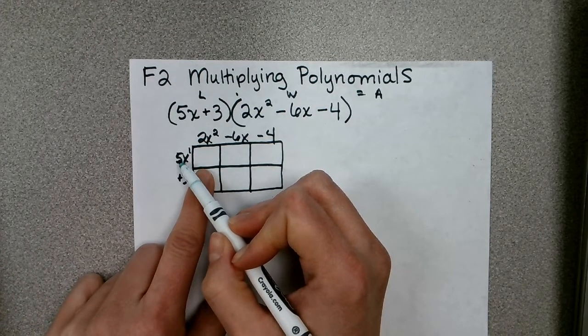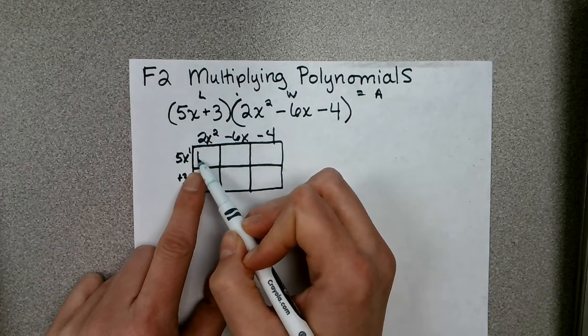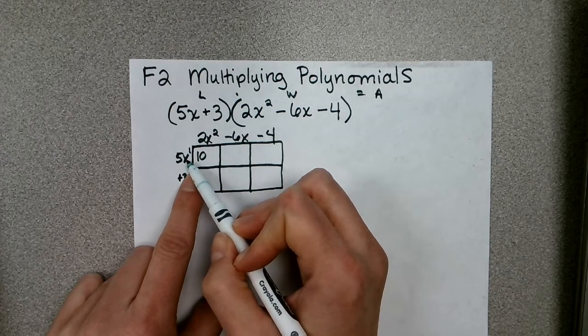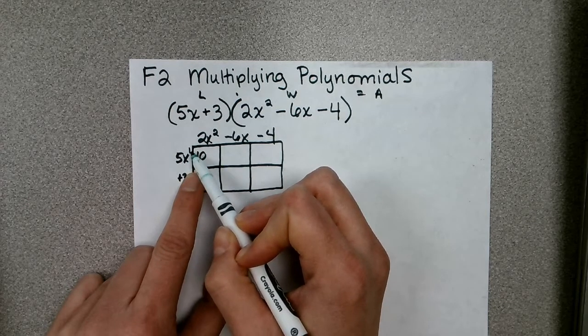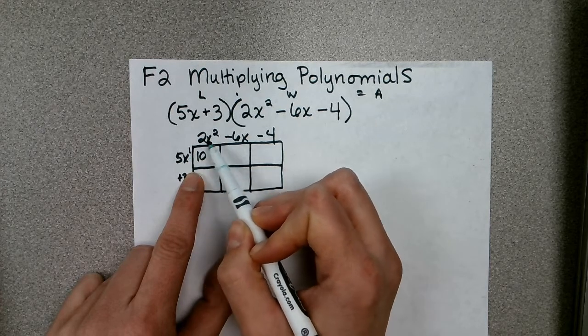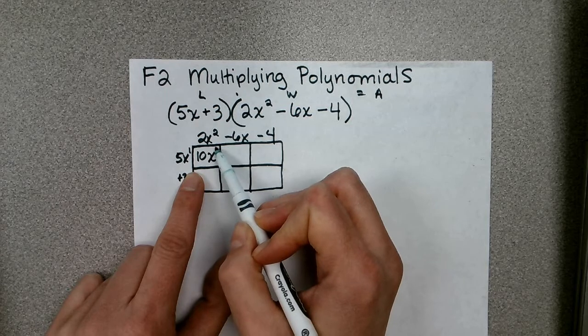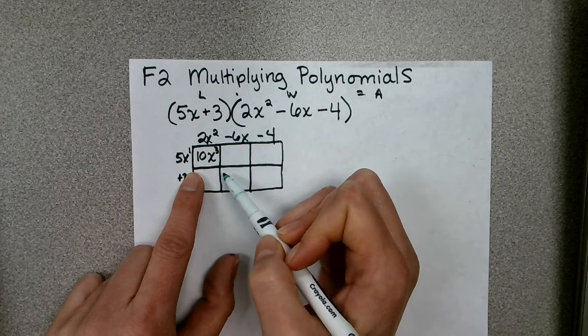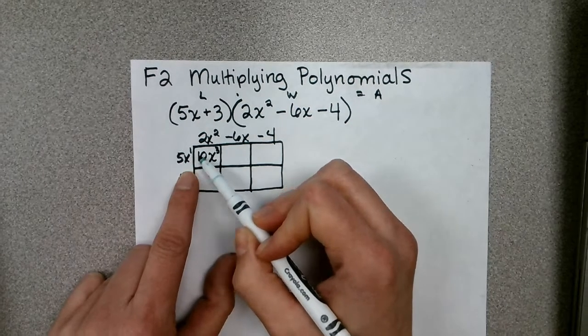When I multiply these, I'm going to multiply the coefficients. 5 times 2 is going to give me 10. Then when I multiply the exponents, x to the power of 1 times x to the power of 2, the exponents add, so this would give you x to the power of 3.